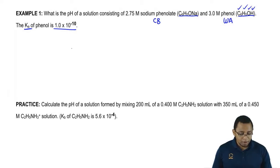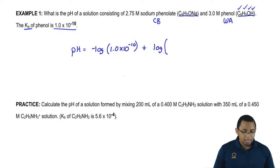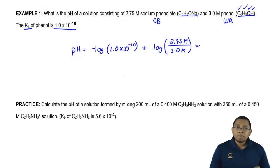Because we have a buffer, we use the buffer equation: pH equals negative log of Ka plus the log of, now they only give us molarity, so that's what we plug in: 2.75 molar conjugate base over 3.0 molar weak acid. When we plug all that in, we get the answer of 9.55.